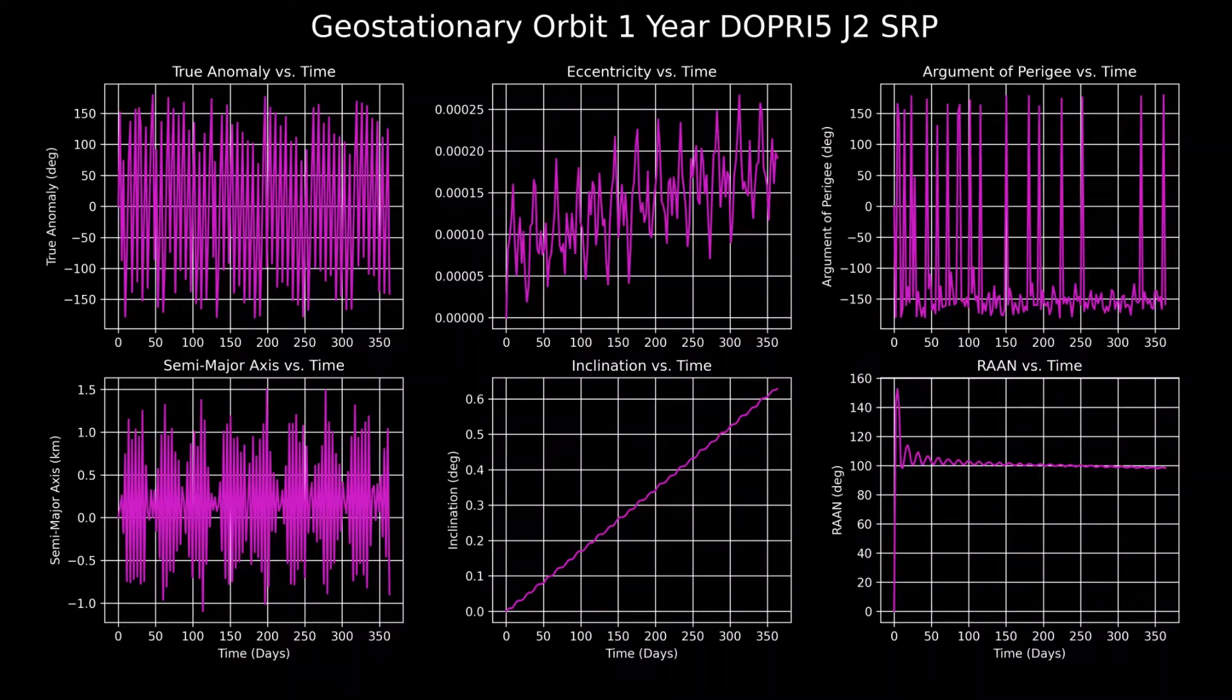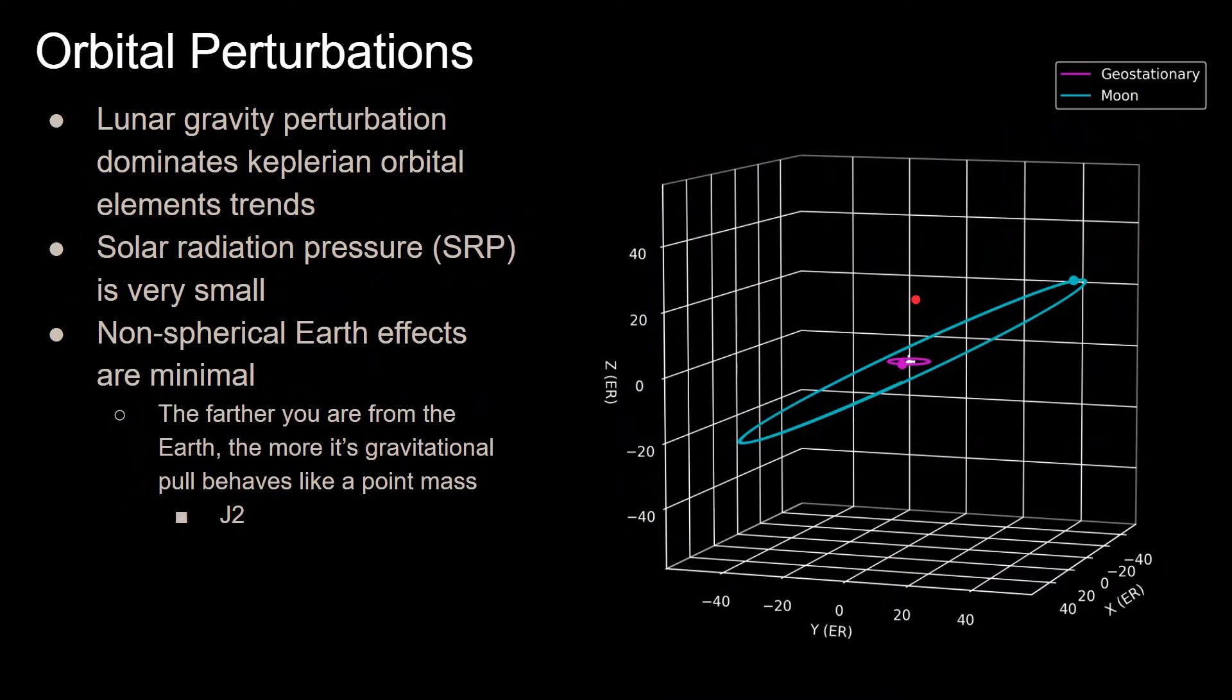The most important element to look at here is the orbital inclination, which is secularly increasing over time due to the pull of the Moon. This matters for geostationary satellites because the farther the orbit gets from zero inclination, the less geostationary it is, thus it's going to be oscillating around the equator instead of being constantly on it.